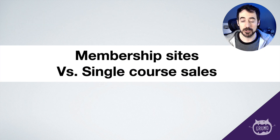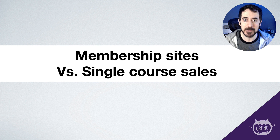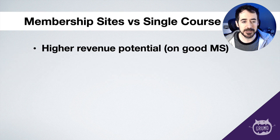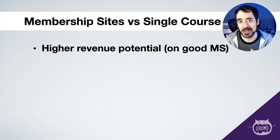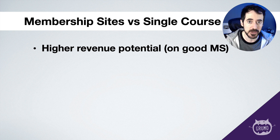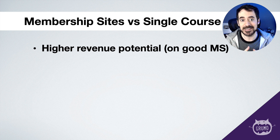Now let's compare membership sites versus single course sales. Most course instructors start by selling courses one by one — you start with one course and charge, say, $100 for it. But once you have a lot of courses, it may make sense to charge a recurring fee. Membership sites, if they're good — if you have a strong community and you've done all the steps I mentioned — you should have higher revenue potential per student. If you look at the lifetime value of your average student, it's probably going to be higher. Although you're charging less upfront — if you're charging $100 for a course and $20 for your membership site, that person would have to stay five months to make the same amount — if your community is really good, they may stick for one or two years, and that single student ends up providing a lot more revenue.